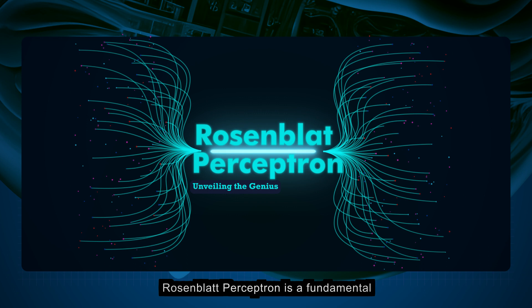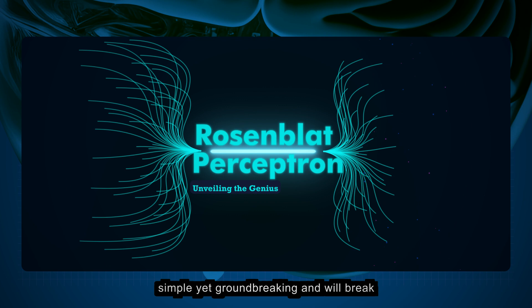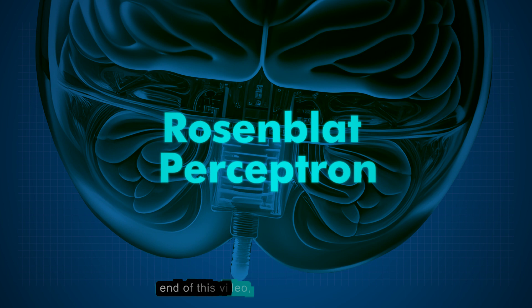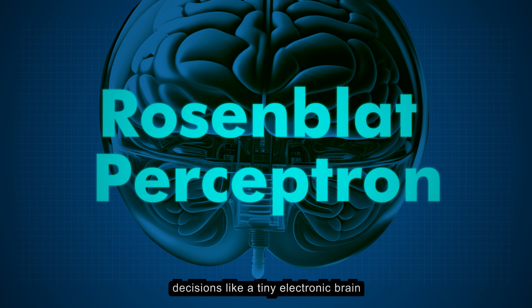The Rosenblatt Perceptron is a fundamental concept that kick-started the journey towards modern neural networks. It's simple yet groundbreaking, and we'll break it down into bite-sized pieces so you can grasp the beauty of this AI gem. By the end of this video, you'll understand what a Perceptron is, how it processes information, and how it can make decisions like a tiny electronic brain cell.